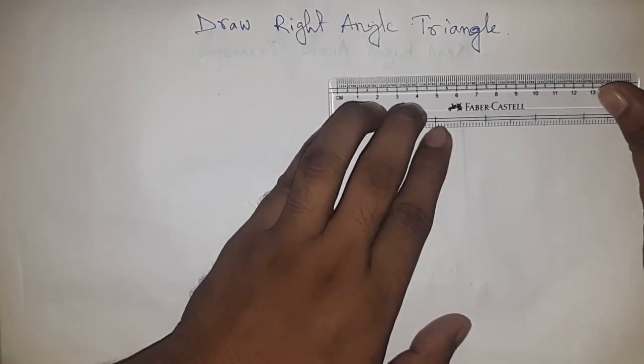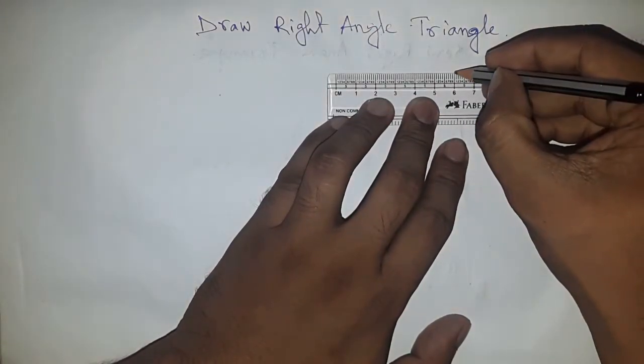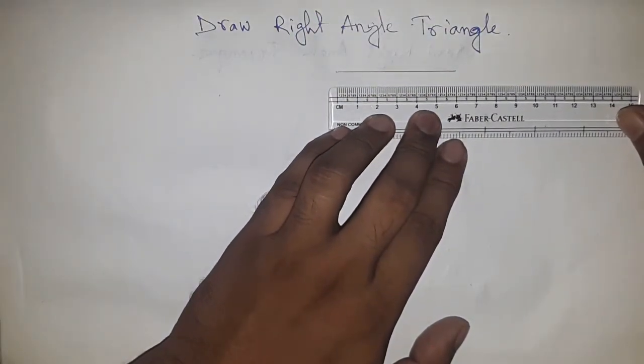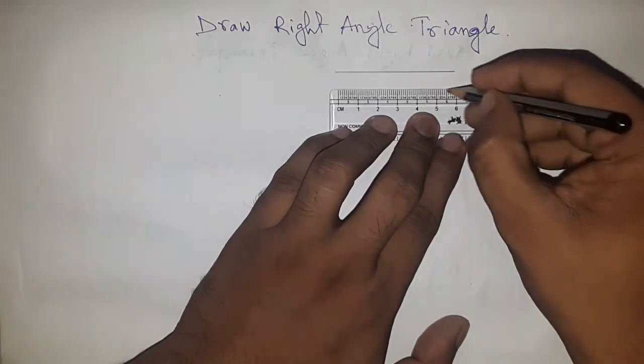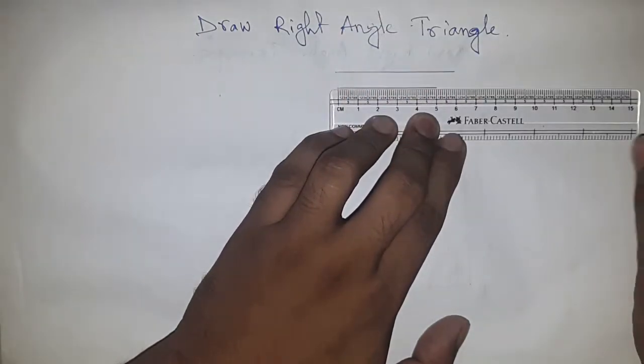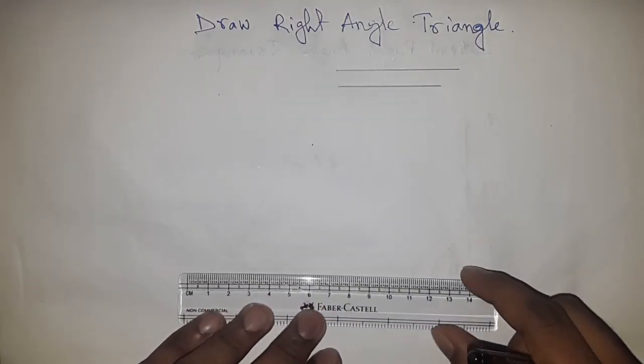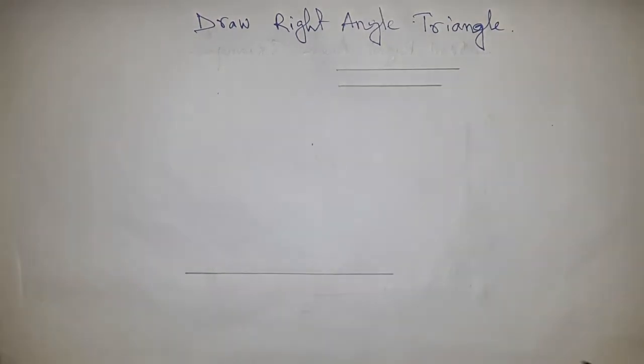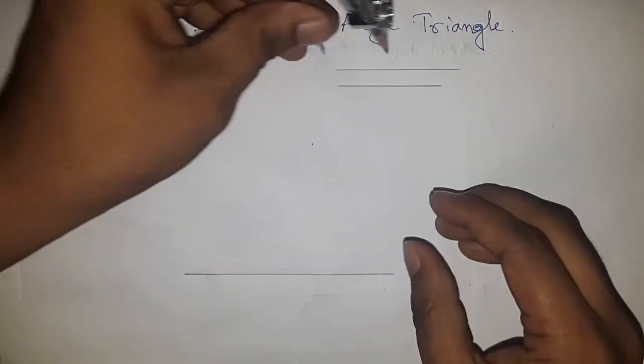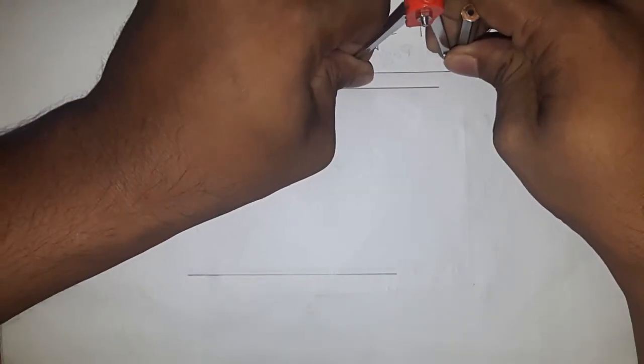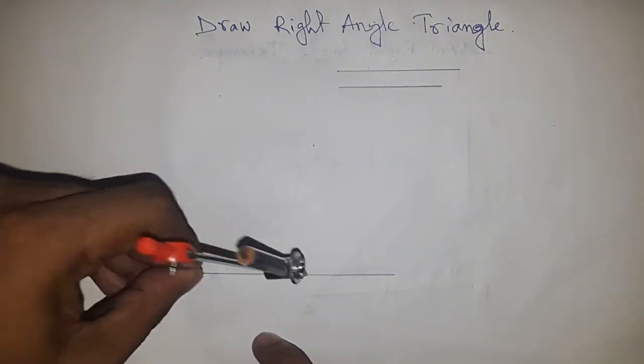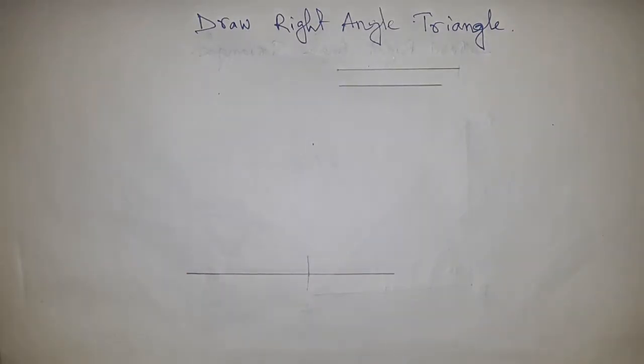Drawing two sides, one is 6 cm and another is 5 cm. Now I am drawing here a line of any length. Now taking measure by pencil compass and putting here and cut this line.